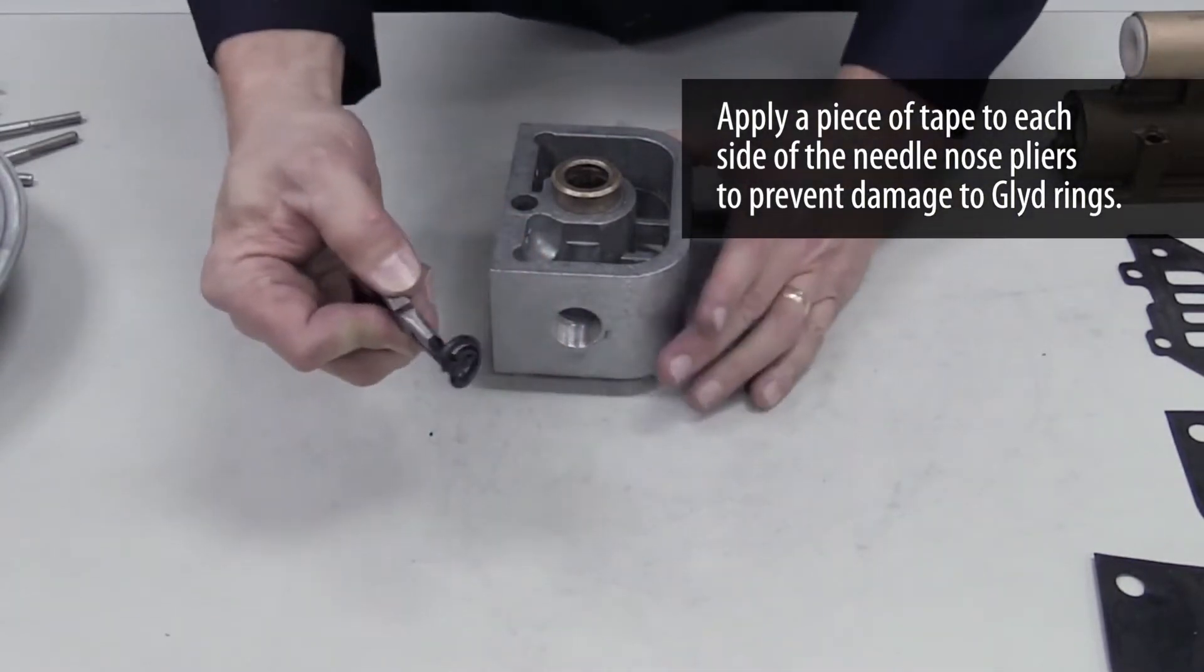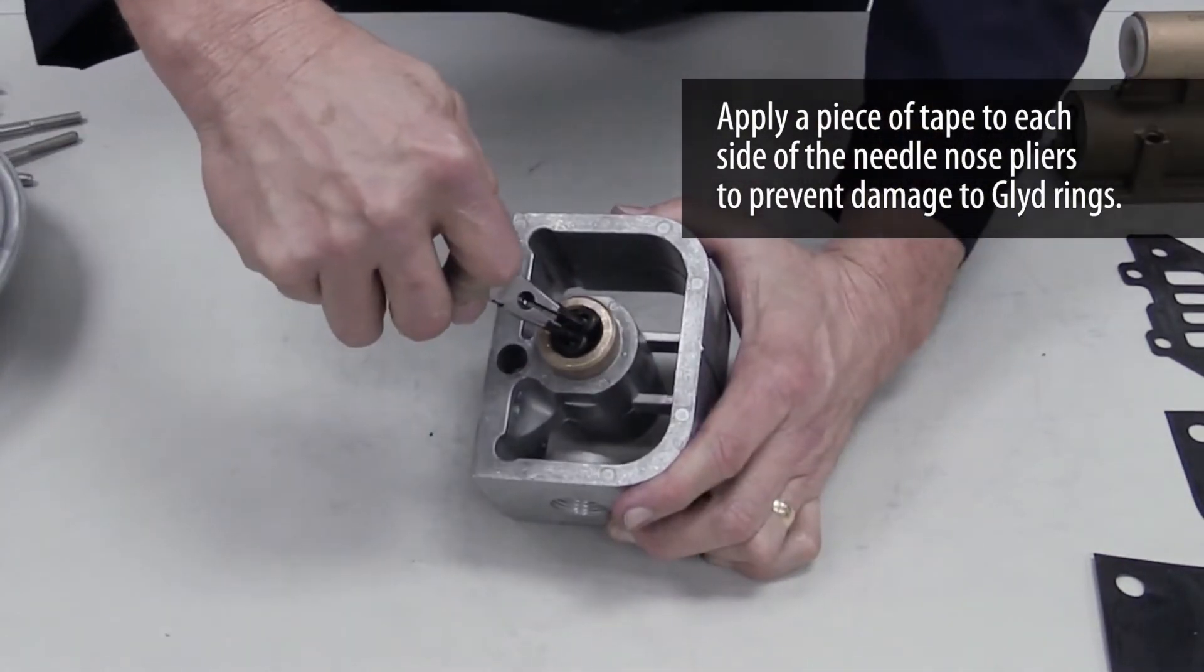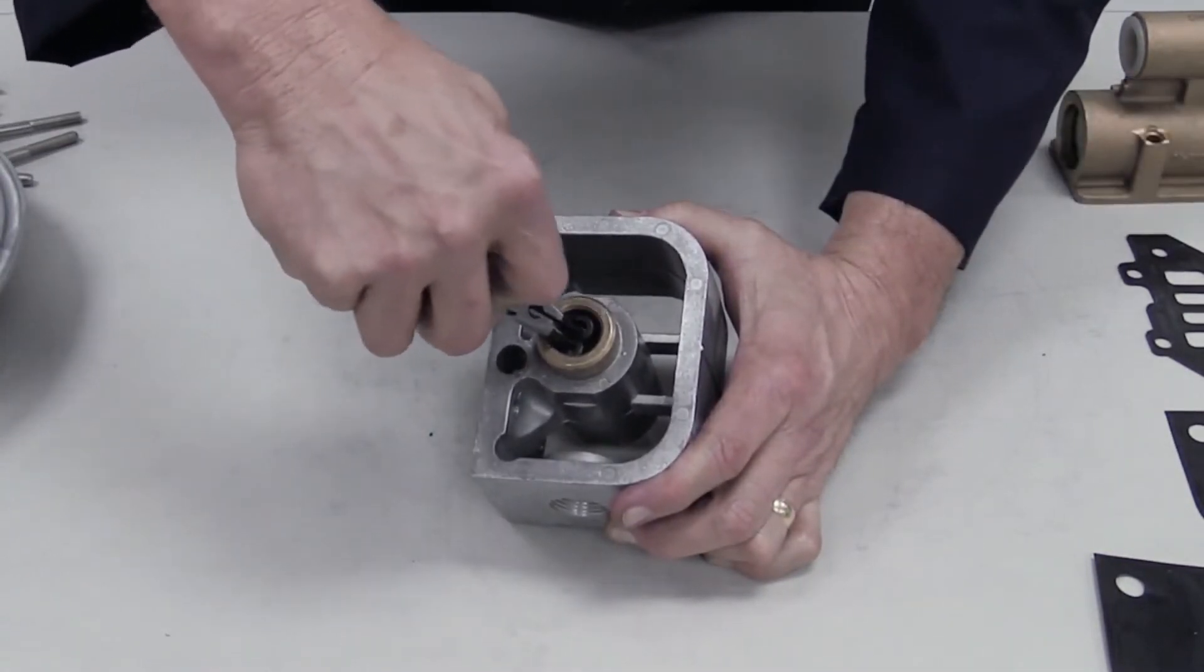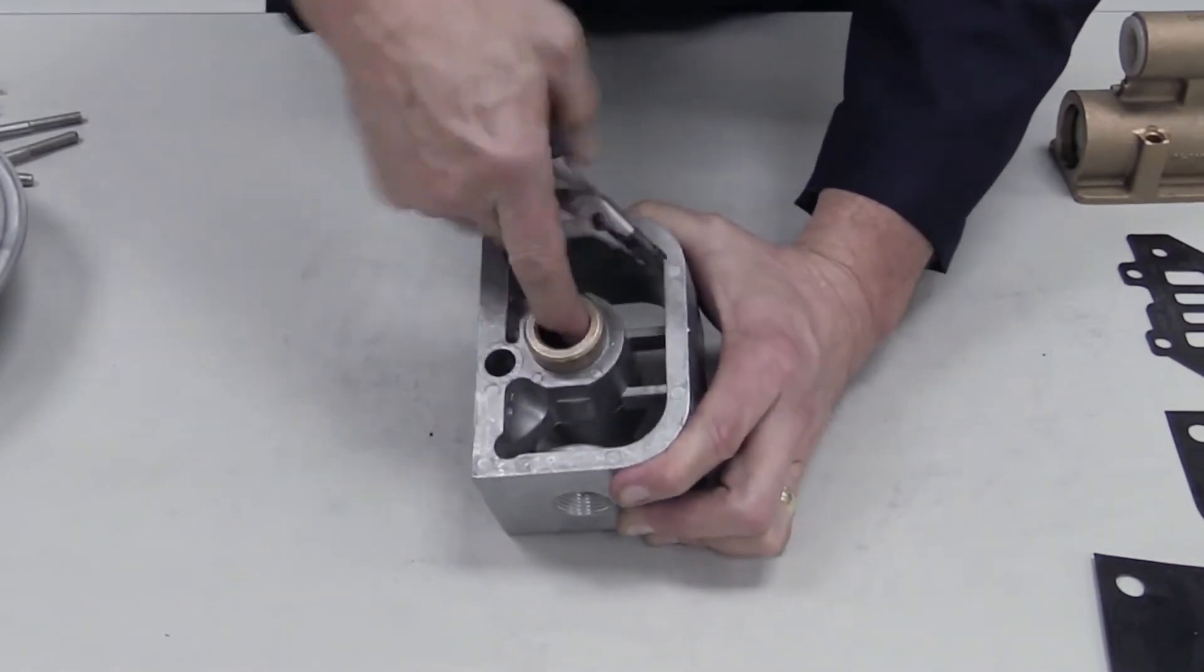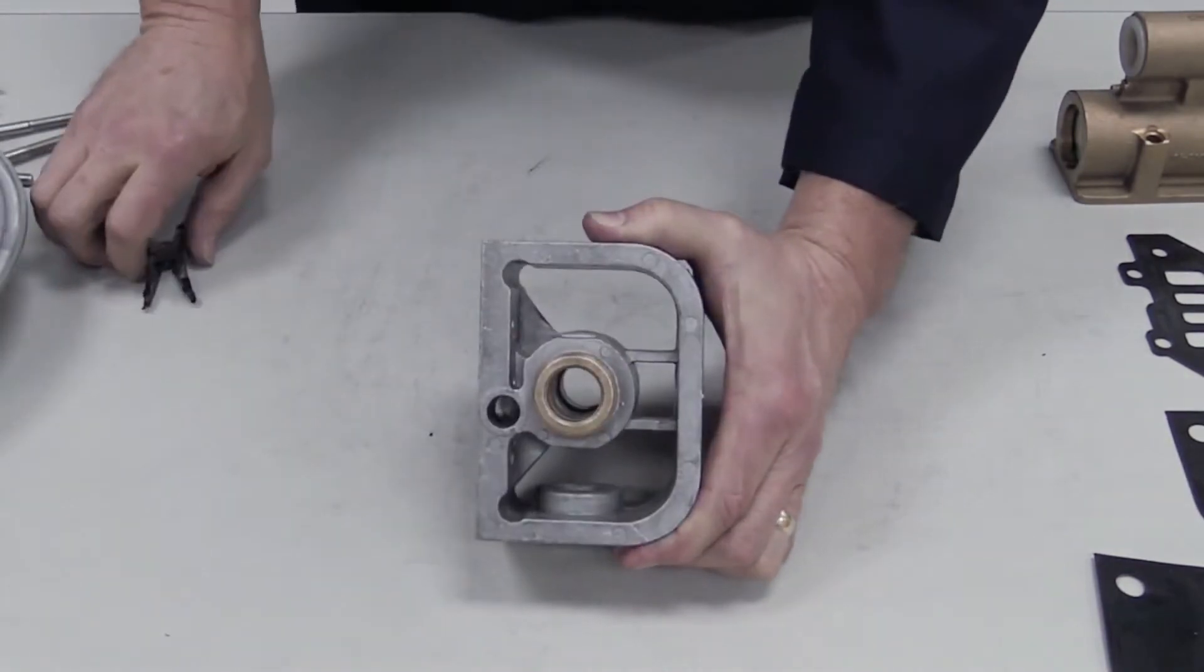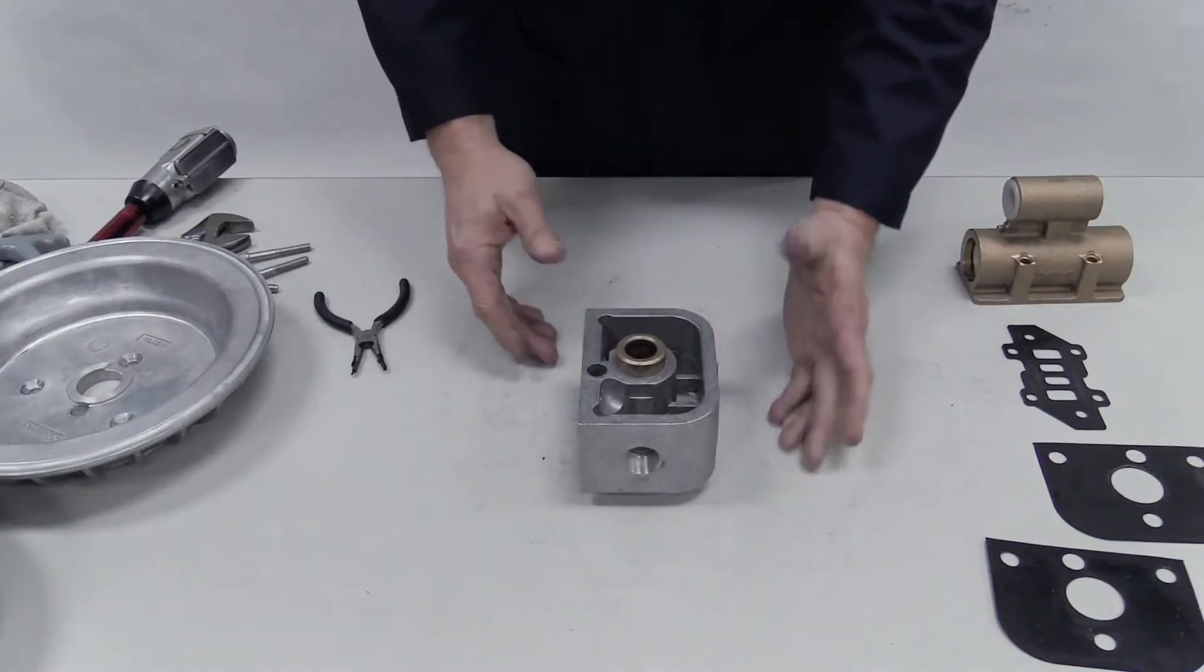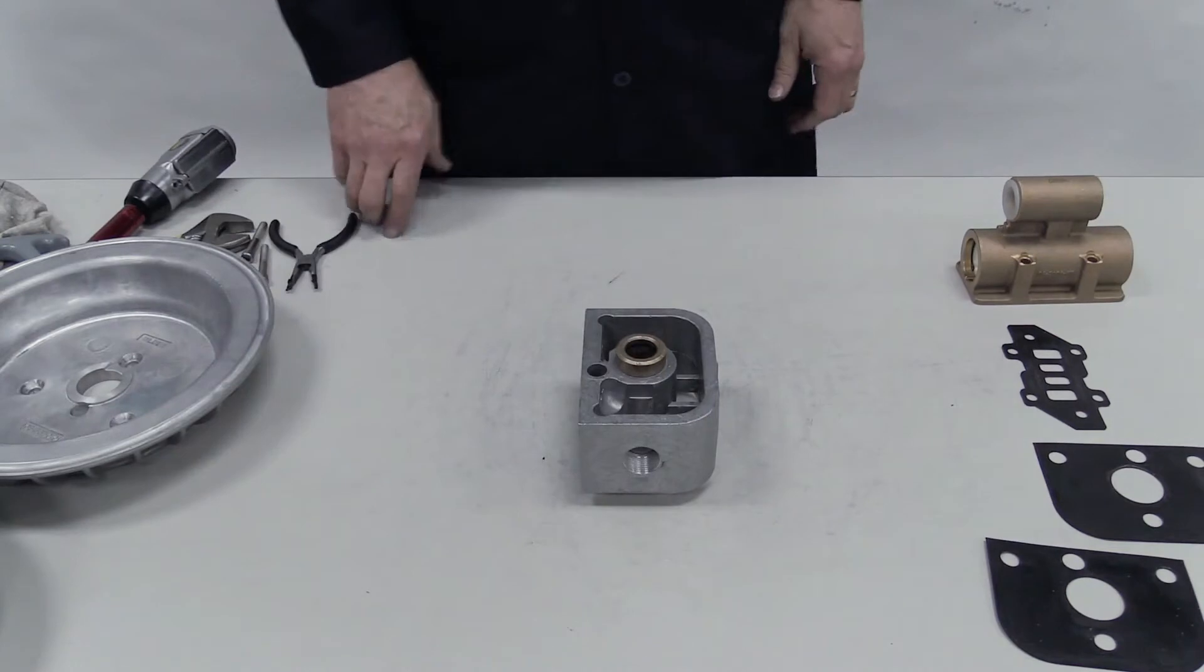While a glide ring is compressed by the pliers, insert it into a groove in the bore. Remove the pliers and push the glide ring back into an O shape to fill the groove. Do this with all seven glide rings.